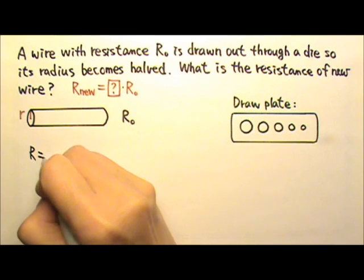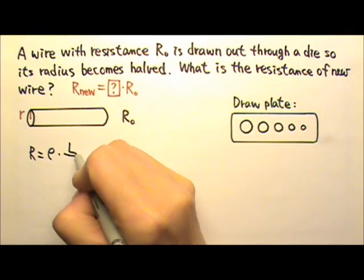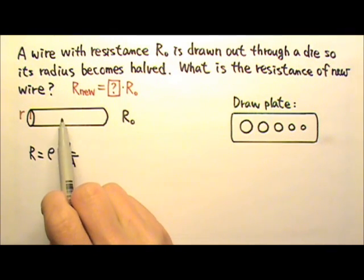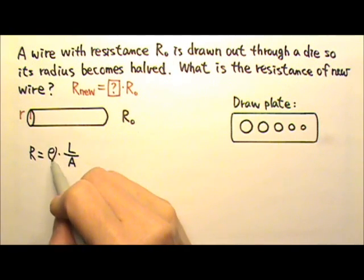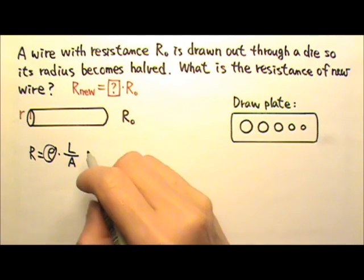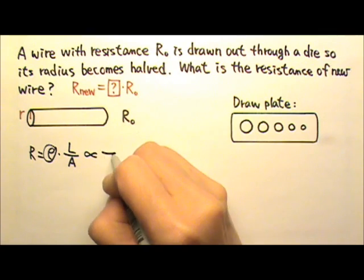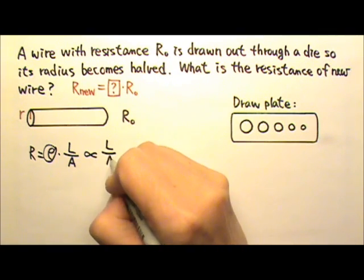The resistance of a wire is rho times L over A. When we draw this wire out of a die, it's still the same material, so the rho resistivity is the same, so this resistance is proportional to L over A.